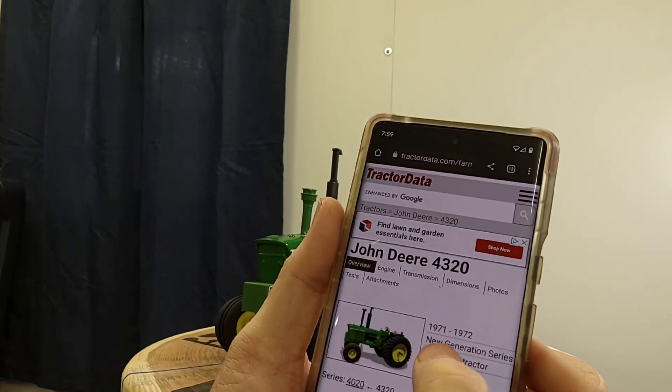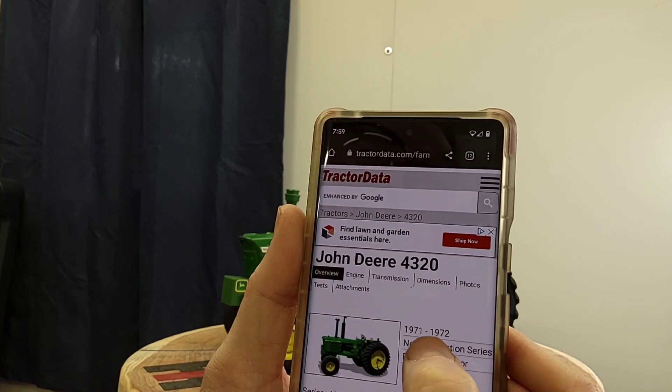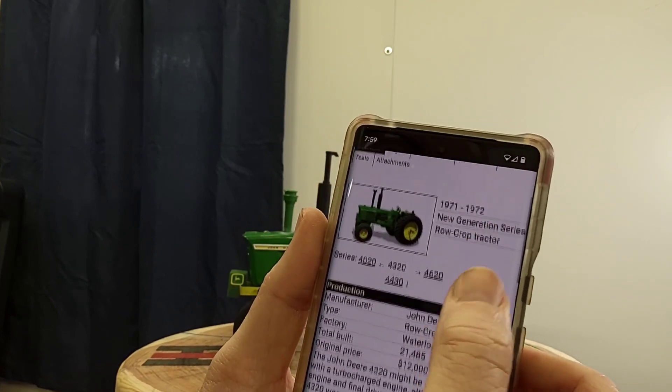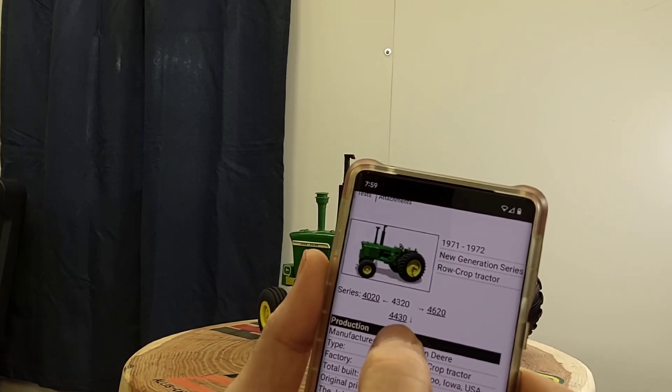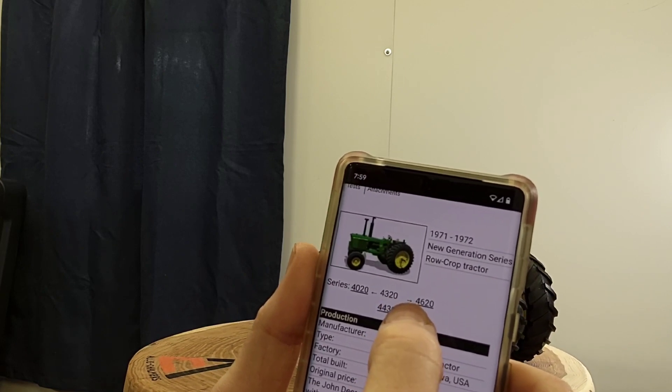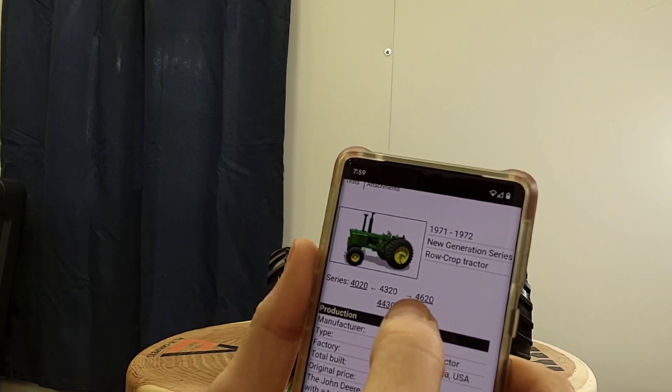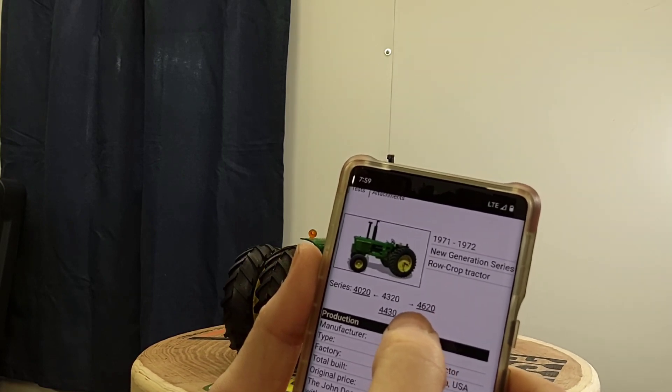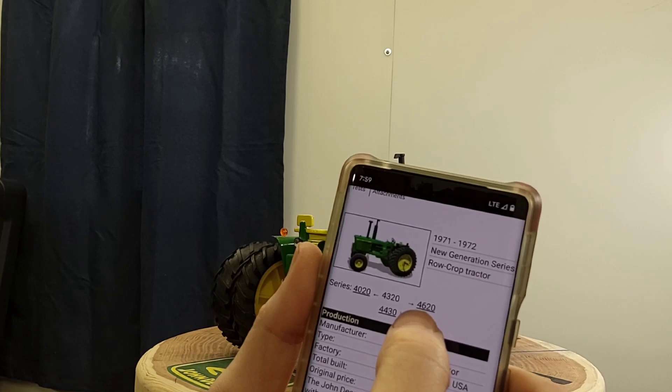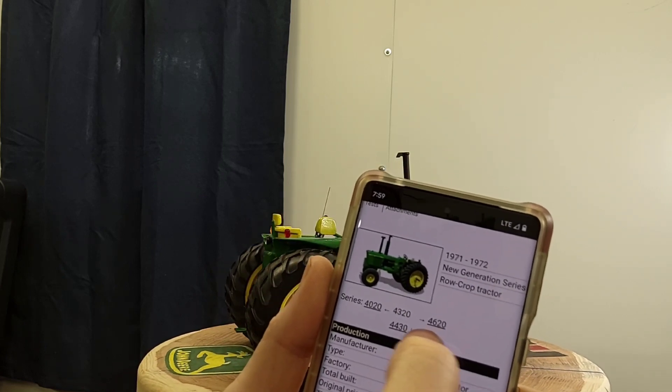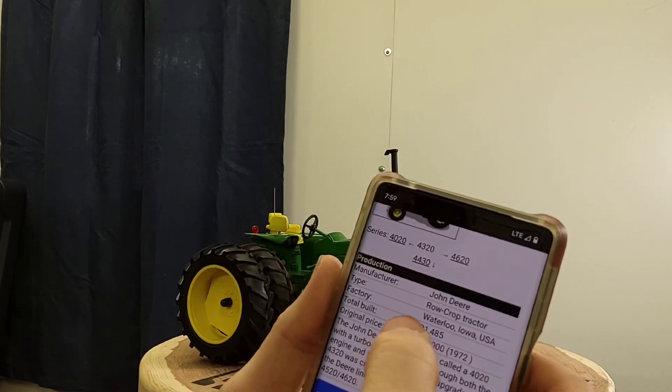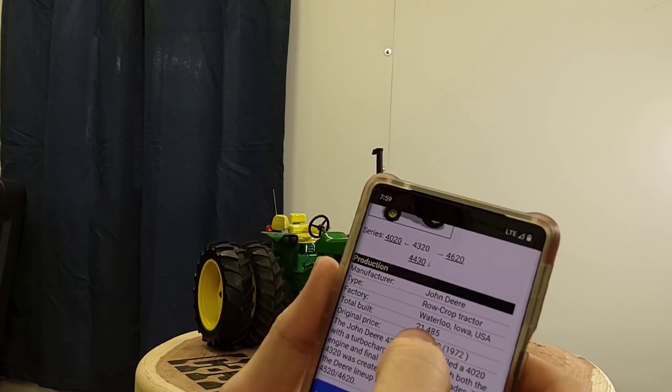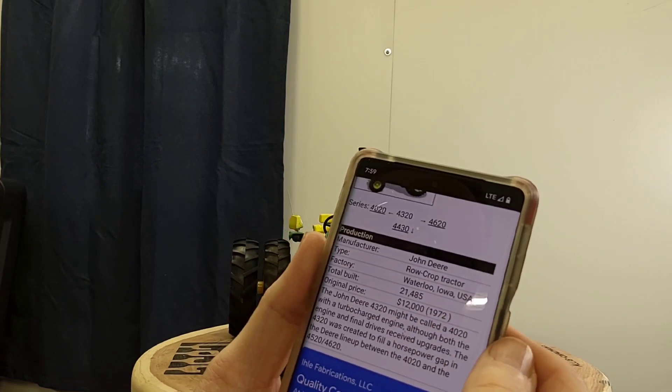The real tractor produced, John Deere 4320, produced between 1971 and 1972, New Generation series of course. The next series comparable tractors to 4430 and the next model in this line it says 4620, but isn't there a 4520? I think this is not accurate, should be a 4520 then a 4620. Waterloo, Iowa, total built 21,485, 12,000 in 1972.